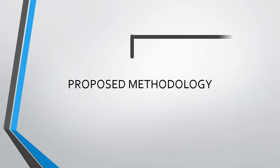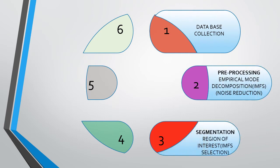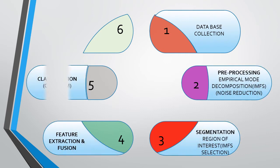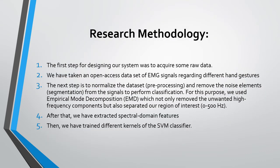Next part is proposed methodology. The research methodology adopted for the classification of EMG based hand gestures is shown in the figure. The first step was to acquire some raw data using an open access dataset of EMG signals. The next step is to normalize the dataset, preprocess it, and remove noise by segmentation techniques. We used empirical mode decomposition, which not only removed the unwanted high-frequency components but also separated our region of interest. After that, we extracted spectral features and trained different levels of SVM classifiers, upon which cubic SVM achieved the highest accuracy of 98.9%.